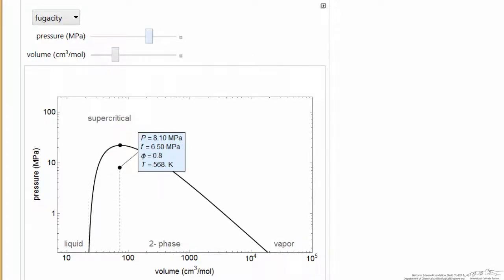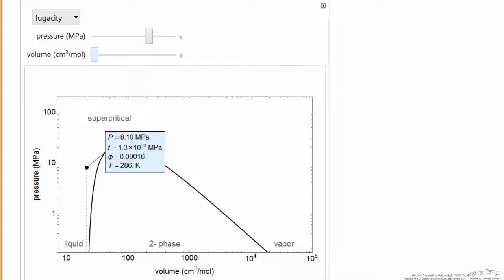So the temperature is lower. If I go back into the two-phase region, I'm at 568 Kelvin, and as I decrease the volume, I move into the compressed liquid. Now I'm at much lower temperatures. Now the fugacity coefficient is very small.